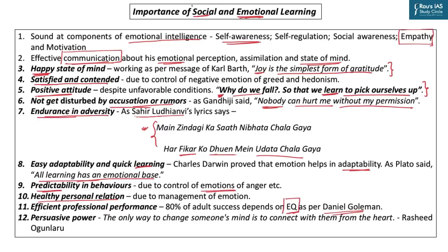Daniel Goleman, who worked intensively on emotional quotient, said that 80 percent of adult success depends on emotional quotient and not intelligence quotient. As a social being, you also have to influence the social environment around you to develop good ethical social infrastructure. So as a moral agent, in the spirit of Immanuel Kant, you must have persuasive power, and persuasion requires understanding of others' state of mind and their emotional state. As Rashid Ogunlaru said, 'The only way to change someone's mind is to connect with them from their heart' — emotional connect is important to persuade someone.